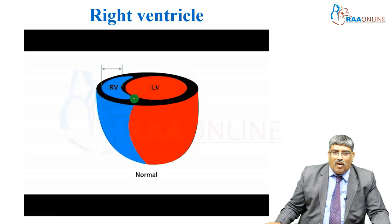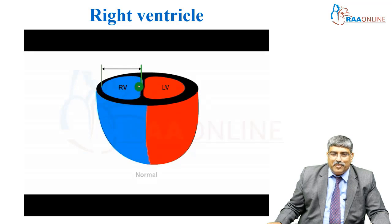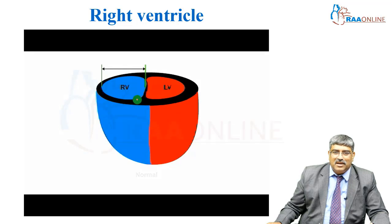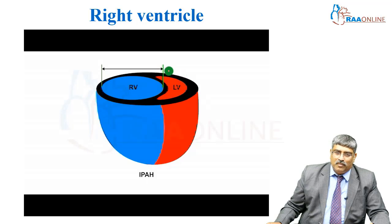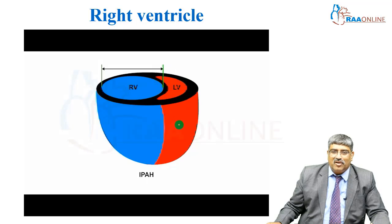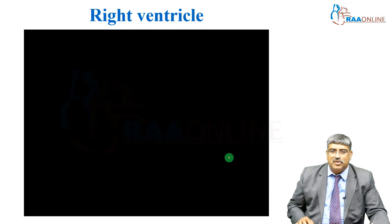The normal right ventricle is semicircular and crescentic. As severe pulmonary hypertension sets in, it enlarges and pushes the septum into the left ventricle, compromising the function of the left ventricle as well.